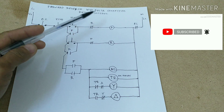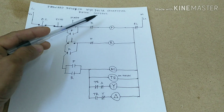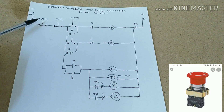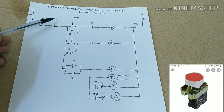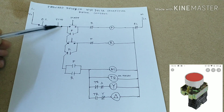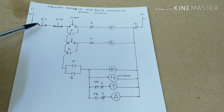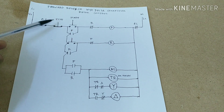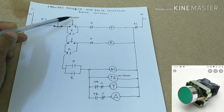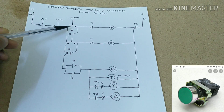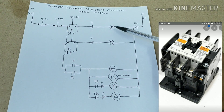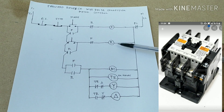This diagram is the forward-reverse Y-delta connection for motor control. This is our emergency switch, normally closed. This is our stop push button. This one is also our stop push button. This one is our start push button. This one is our contactor for forward, and this one is our contactor for reverse.